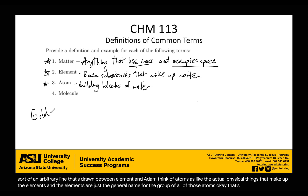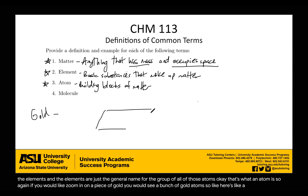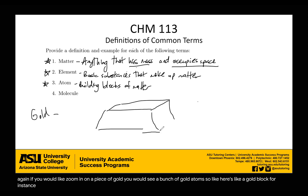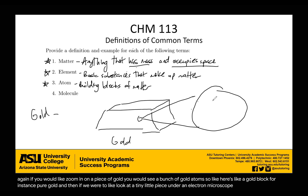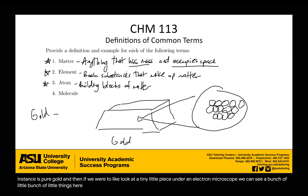So again, if you were to zoom in on a piece of gold, you would see a bunch of gold atoms. Here's a gold block — pure gold — and if we were to look at a tiny little piece under an electron microscope, we'd see a bunch of little things, and each of those tiny little things is a gold atom. So that's what an atom is.